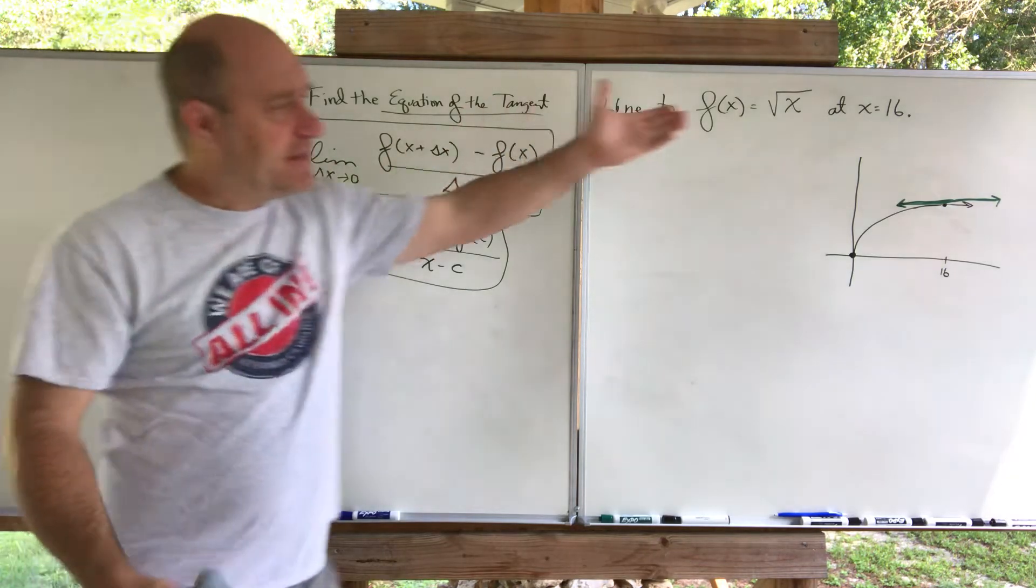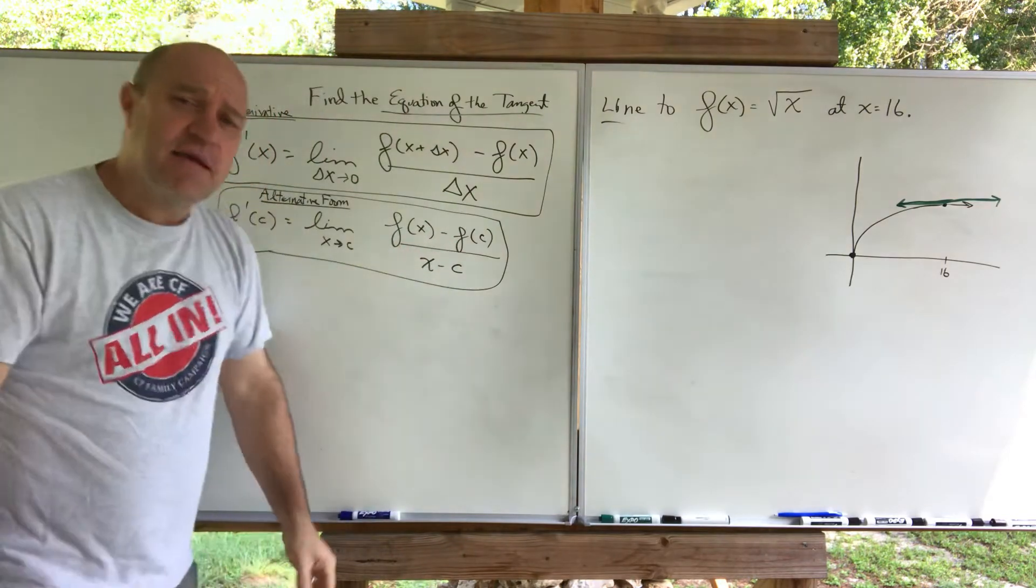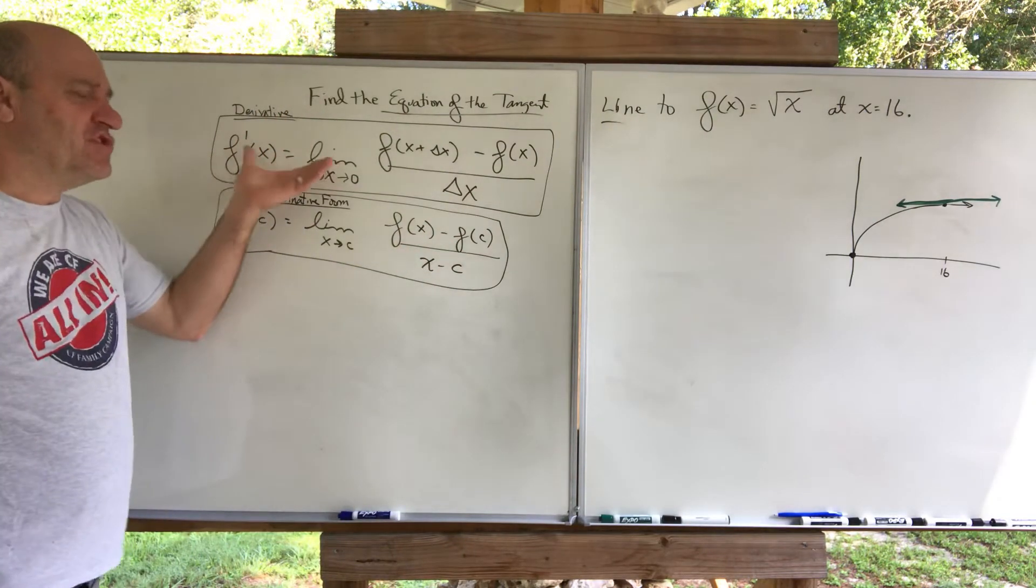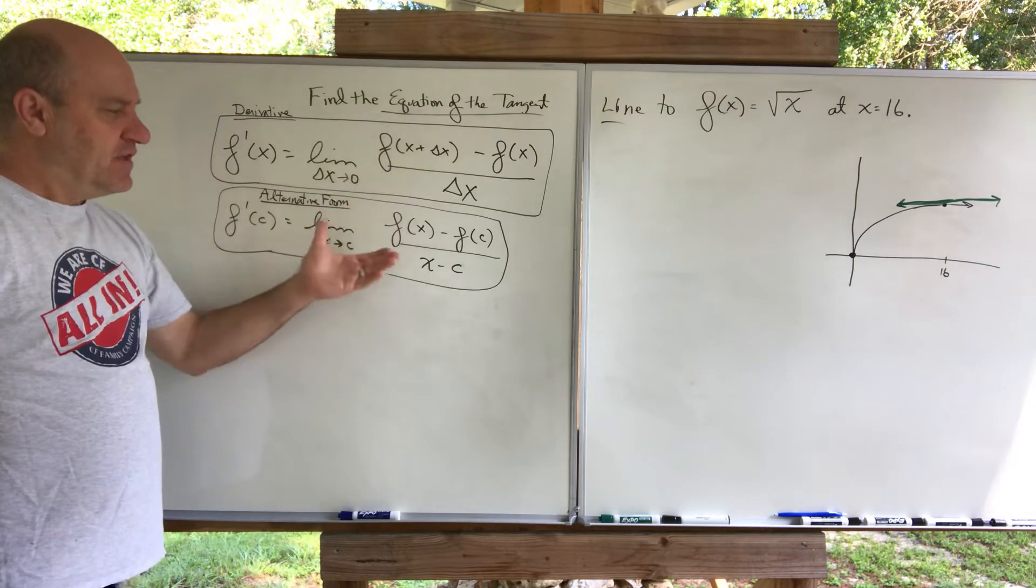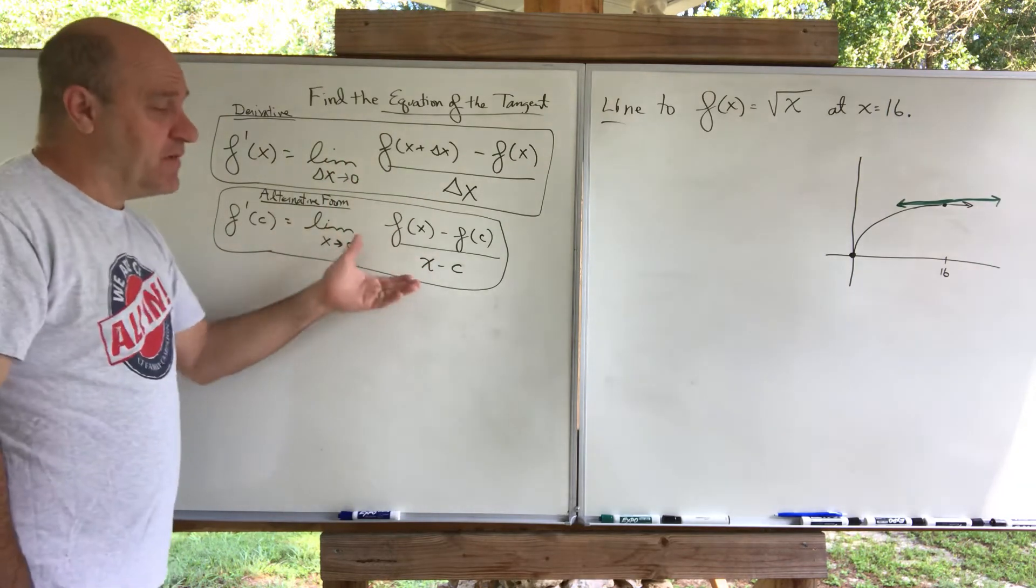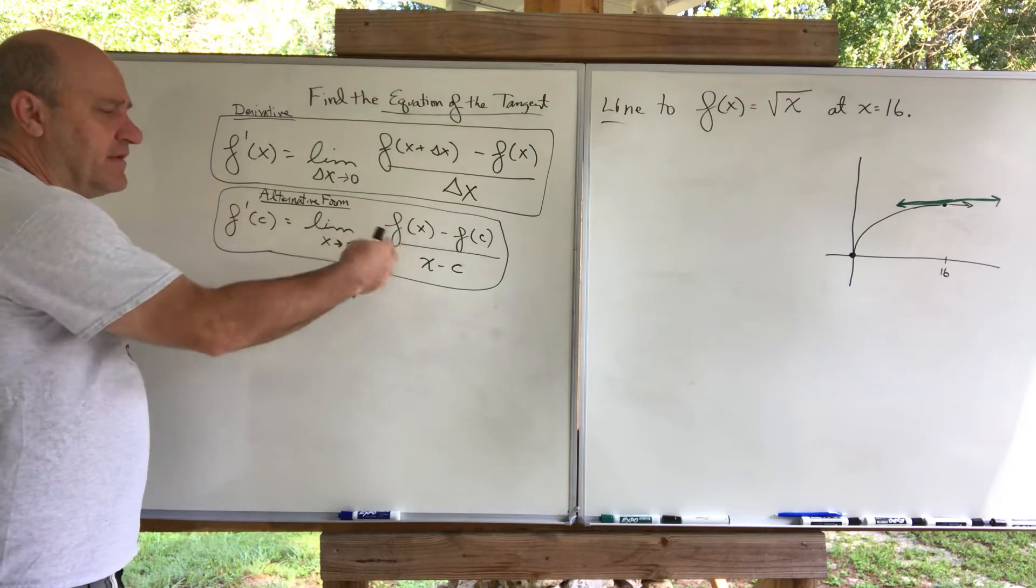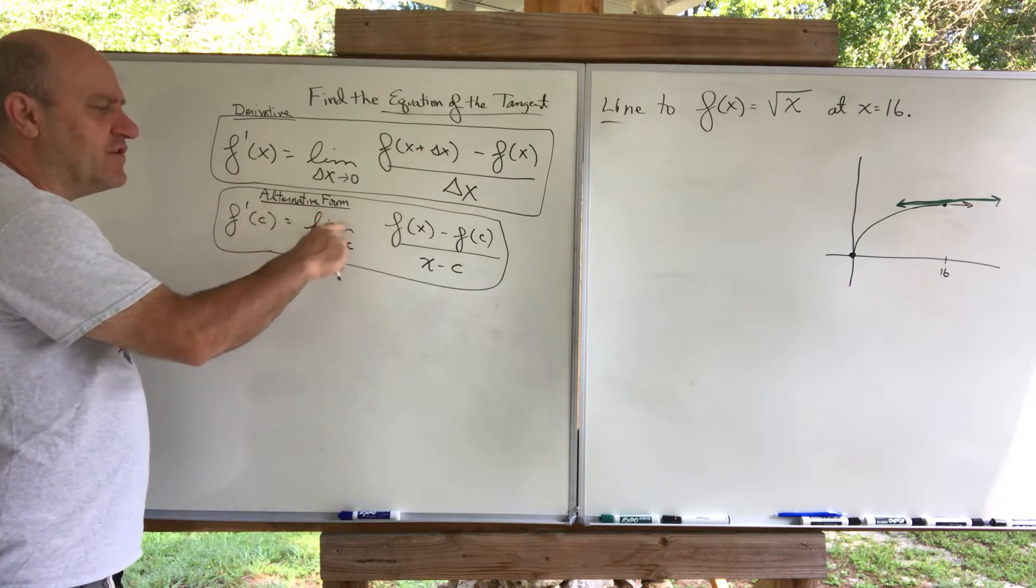When you get the derivative, f prime of x, it's in general for any x. And then I would plug in the 16 to get the slope at 16. So I would have a slope in general. We've done this several times. We've done something like this before also, but it's kind of new here. It's called the alternative form.